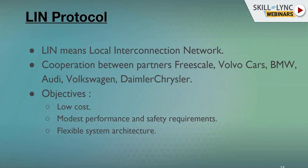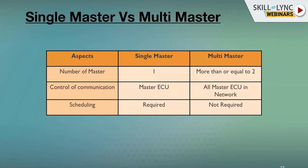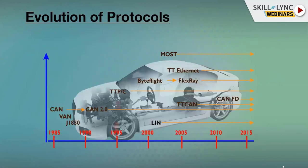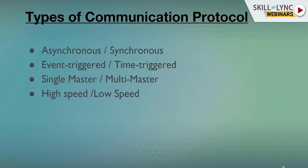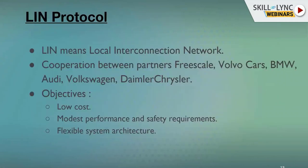LIN came after CAN — LIN arrived in 2000 while CAN came in 1985. The question is: why was a new protocol needed? The first objective of LIN is low cost — it is the cheapest protocol in the automotive industry. It is a single master protocol where we don't share any clock.